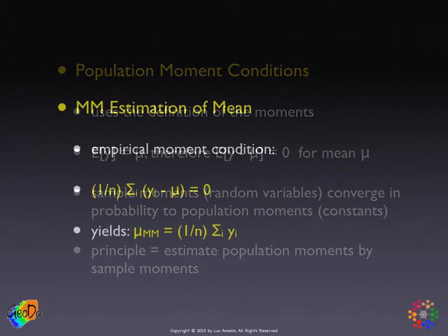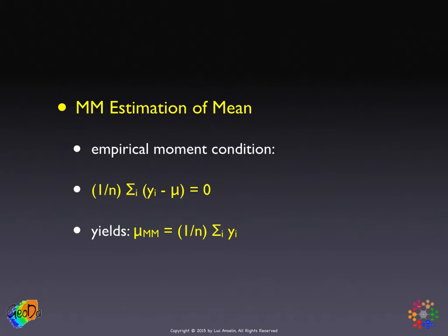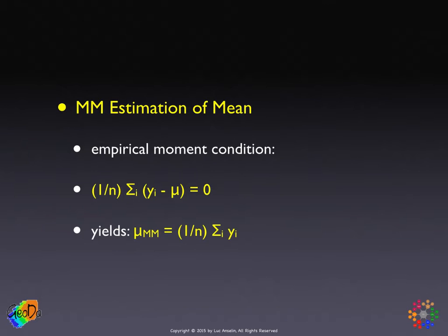For example, in the context of estimating a mean, we express the condition that the expected value of y minus the mean mu is zero. We replace the expected value by the average — we take the average over the sum of all deviations between the observed random variable y_i and the theoretical mean. The value for mu that solves this empirical moment condition is the method of moments estimator, and without any surprises, the estimate of the mean is the sample average.